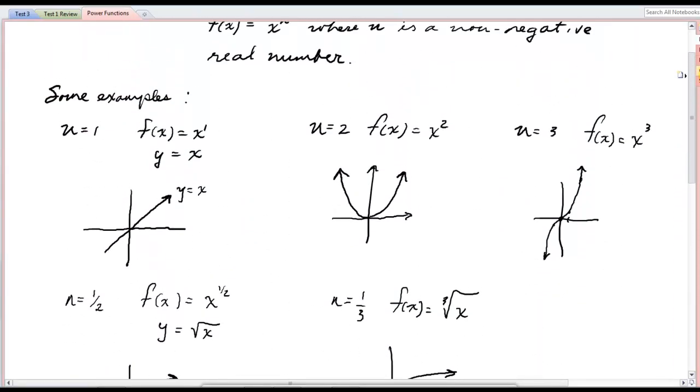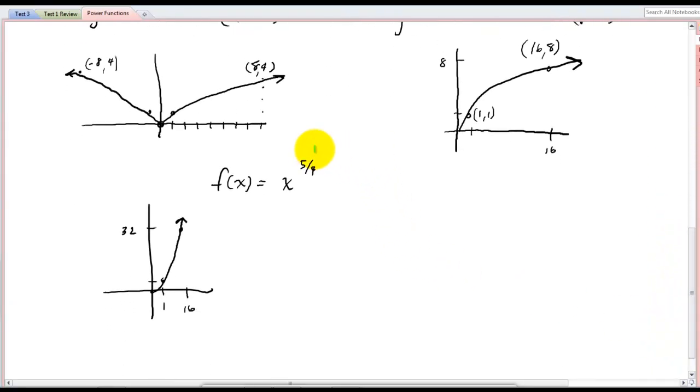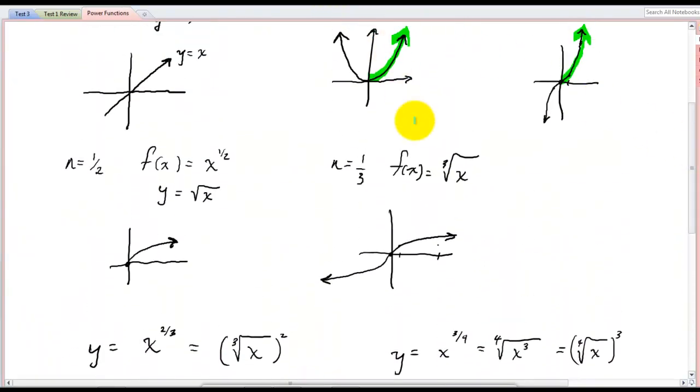I want you to notice that when the power was 1, it was at a 45 degree angle. There was no curve. When the power is greater than 1, here's an example where it's greater than 1, it curves up. The power here is greater than 1. It curves up. The power down here, 5 fourths is greater than 1, so it curves up. Anytime the power is greater than 1, you'll have an upwards curve. Anytime the power is between 0 and 1, as 1 half is, you can see it curves out.